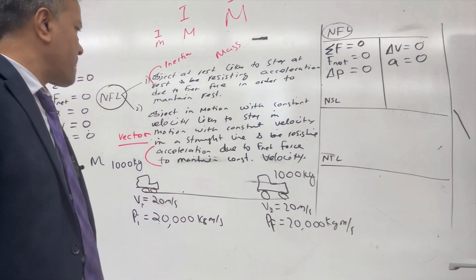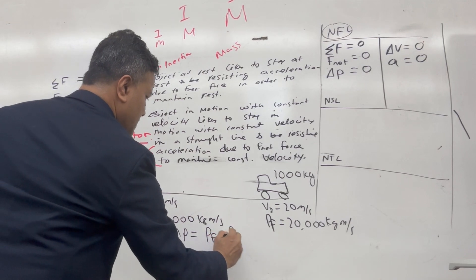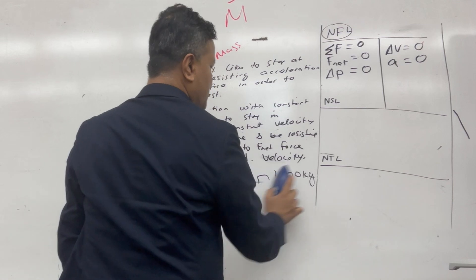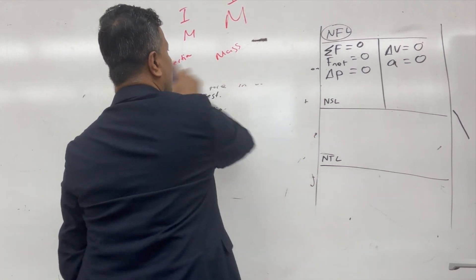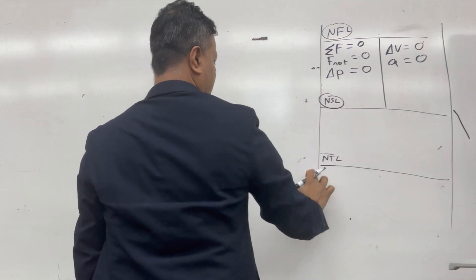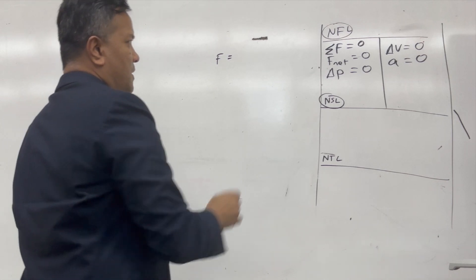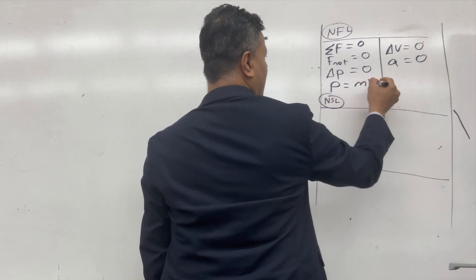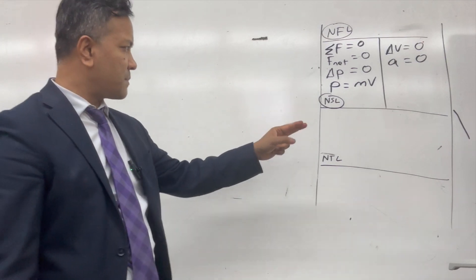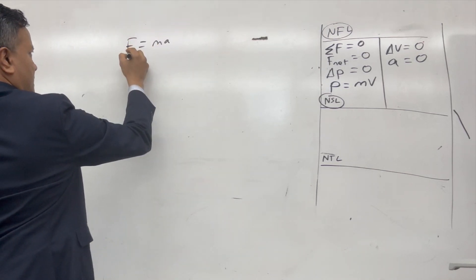Now let's rediscover Newton's Second Law. Change in momentum, delta P, equals P final minus P initial — which is zero in the previous case. You already know Newton's Second Law as F equals MA. And from Newton's First Law, momentum P equals MV. Newton himself, when he published his Principia in 1685, wrote it differently. Looking at displacement versus time and velocity versus time graphs, acceleration is delta V over delta T.